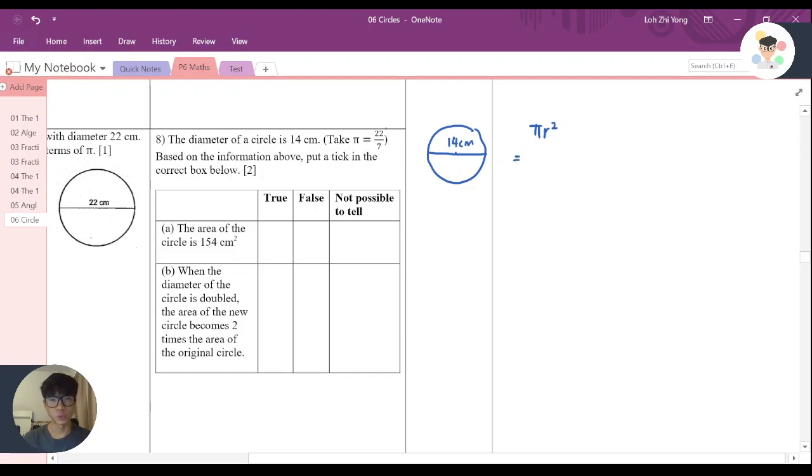So pi we are given with 22 over 7, and what is the radius? Our diameter is 14 cm, and radius is only half of the diameter, that's why it's 7 cm. That's why here I need to times 7 squared.